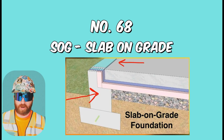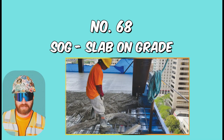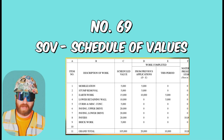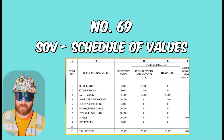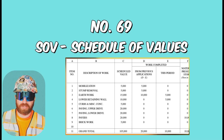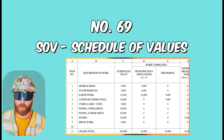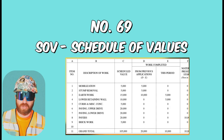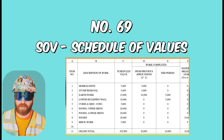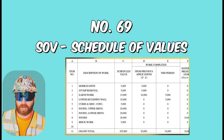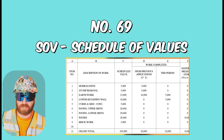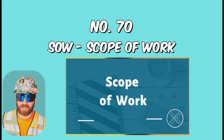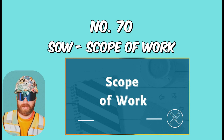SOG, or Slab on Grade, is when you pour concrete on the ground. SOD, Slab on Deck, is when you have an elevated pour. SOV, or Schedule of Values, is a breakup of the total contract amount into smaller sections — many construction projects are set up contractually to show transparency in pricing, so the owner can track what is actually being put in place each month. SOW, or Scope of Work — it's just the description of what needs to be completed.